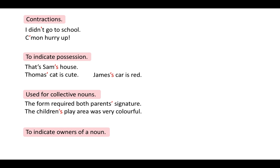The m-dash adds emphasis to the sentence. It can be used instead of round brackets, commas, or colons. For example: 'She is scared of two things: heights and spiders' can be written as 'She is scared of two things — heights and spiders.' Another example: 'I went to the shop, but it was closed' can be written as 'I went to the shop — but it was closed.' The sentences are the same; however, the m-dash adds emphasis.